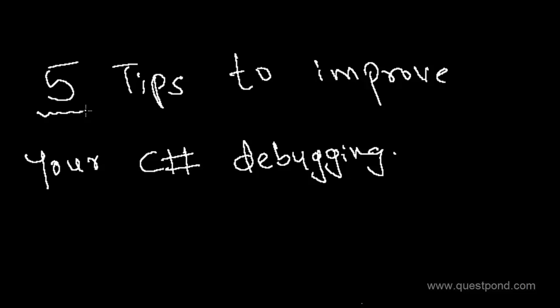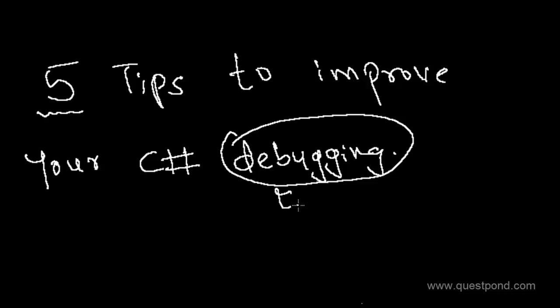Before we get into these 5 tips practically, let's first understand what exactly debugging is. Debugging is a process wherein the developer would like to find a defect in a program or remove a defect from it. To do so, he would like to go and see step by step how the program flow is executing — which methods are executing, how the program flow is moving, and what data is set in variables and objects.